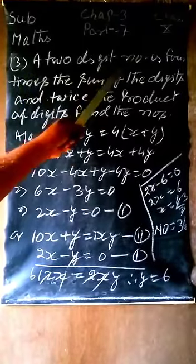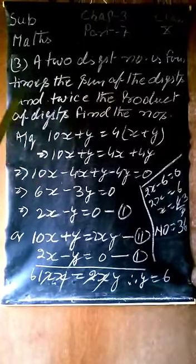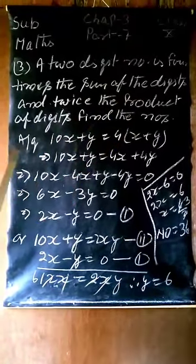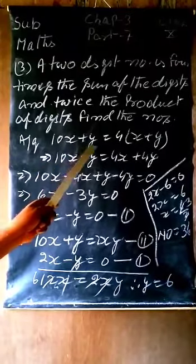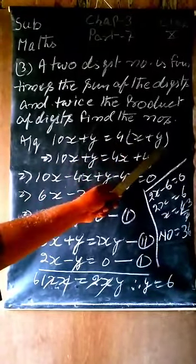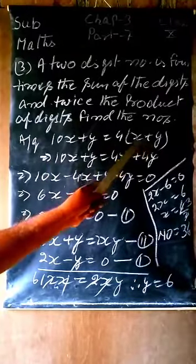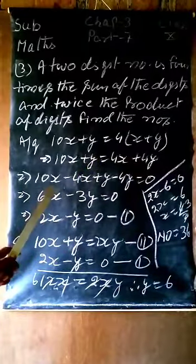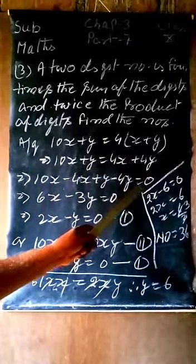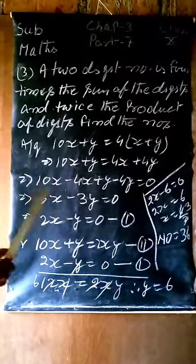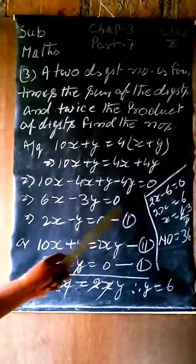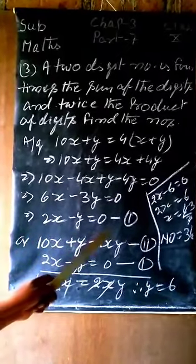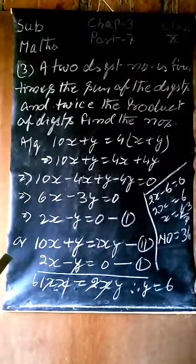Third question: a two digit number is 4 times the sum of the digits and twice the product of the digits. Find the number. According to question, 10x plus y equals 4 times (x plus y). 10x plus y, now we multiply to get 4x plus 4y. So 10x minus 4x plus y minus 4y equals 0. So 6x minus 3y equals 0. Now here we have 3 common, so 2x minus y equals 0. Equation second: 10x plus y equals 2xy.